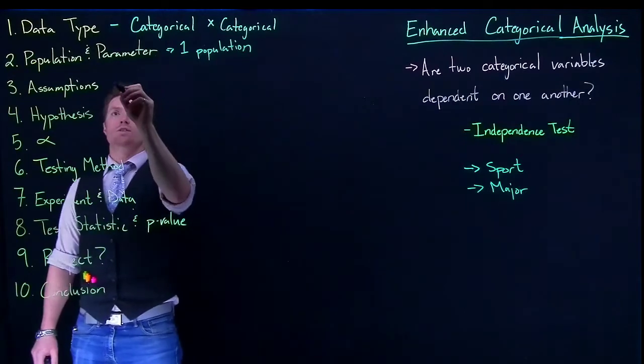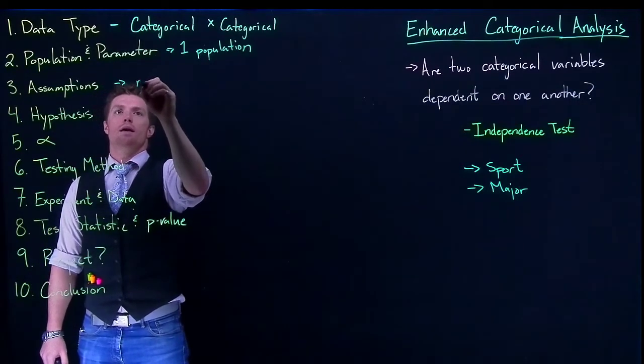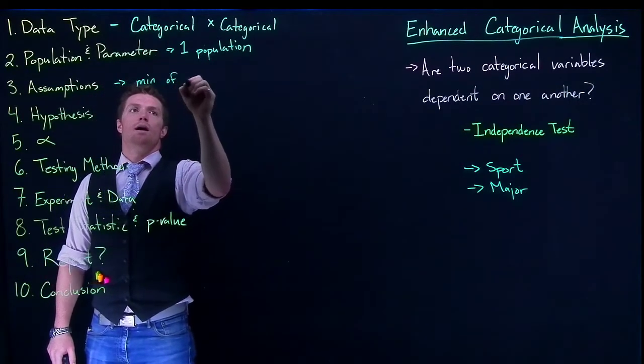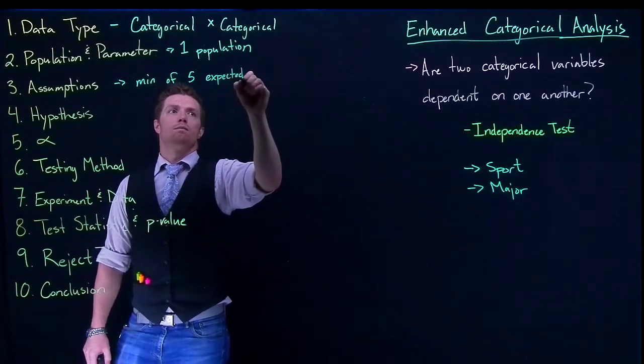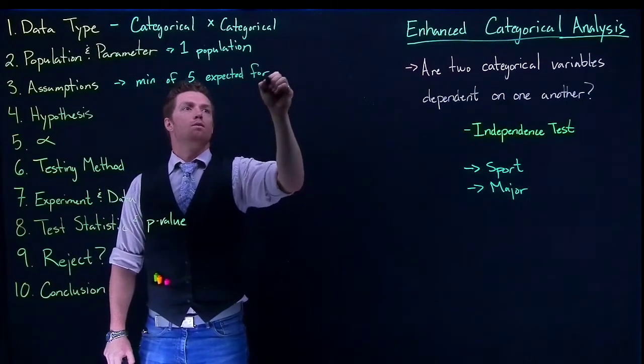Our assumptions: we still need a minimum of five expected for every outcome.